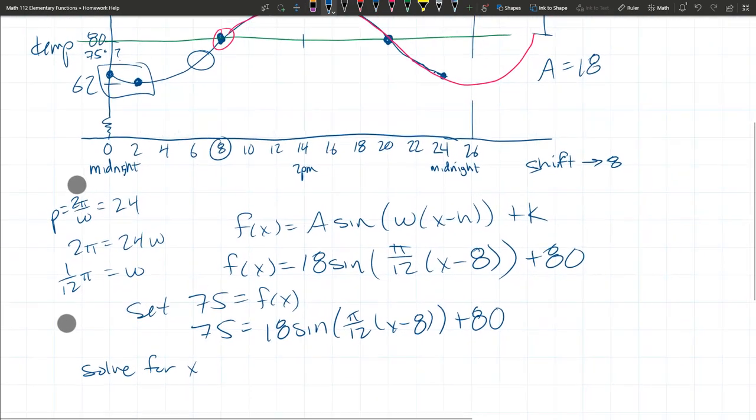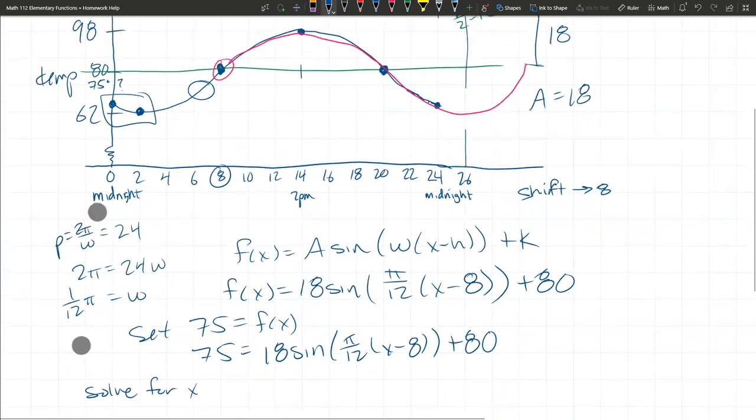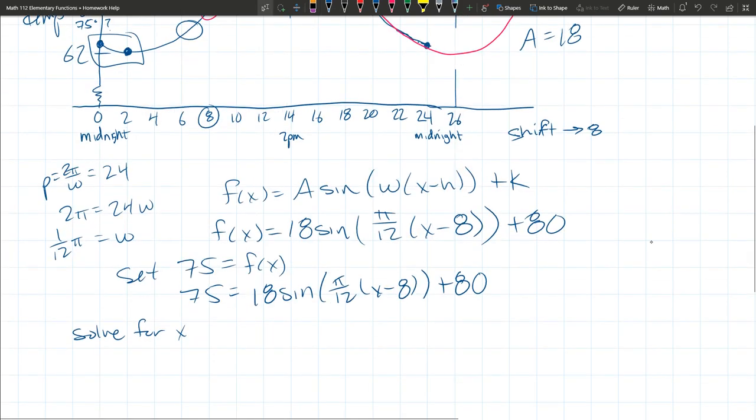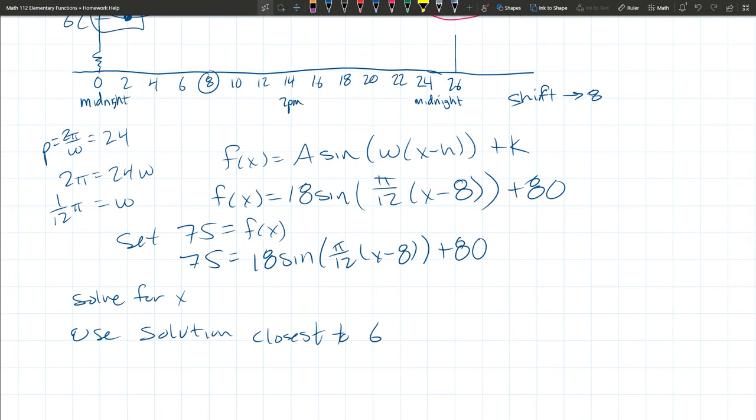You will get infinite solutions because you actually get two solutions per period, and then you have infinitely many periods. But as you can tell, you really want the solution that's somewhere between, I'm going to just go ahead and say it's definitely between two and eight. It's probably going to be sort of close to six. So we're going to use solution closest to six. This is going to be a decimal answer here.